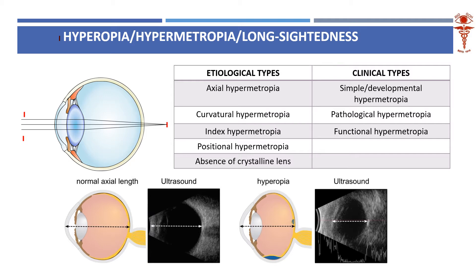Why should the focus go behind the retina? There are multiple possibilities. The eye can be small — if the eye is small, the refractive system will project the image behind the retina. Can you see here, the image is going behind the retina because the eyeball is very small. Normally the eyeball should be around 24 millimeters, but in a hyperopic eye it may be only 22 millimeters or even lesser.